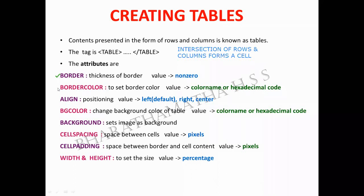You can set a color for the border using the border color attribute. The color can be set either as a color name directly or as a hexadecimal code. The alignment attribute controls which side of the browser screen the table appears on — left, right, or center.